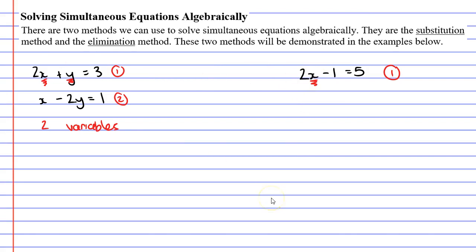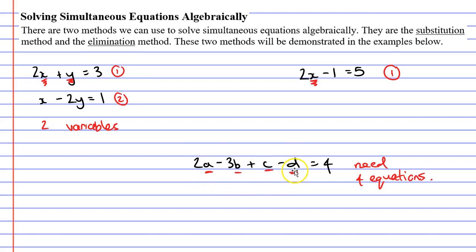So what happens if you have more than two variables? Let's say we have 2a minus 3b plus c minus d equals 4. Here we have four variables — a, b, c, and d — which means that we would need four equations in order to solve this. We would need four equations that each use only the variables a, b, c, or d.